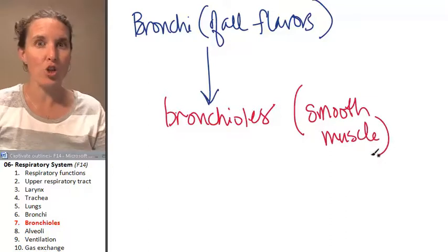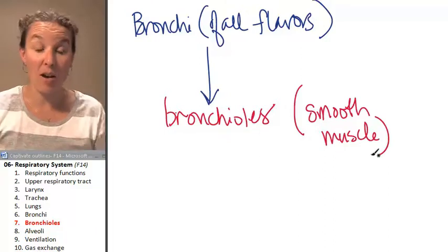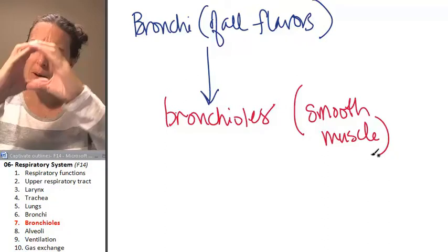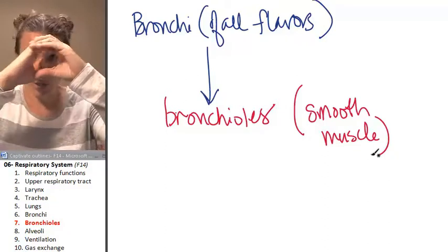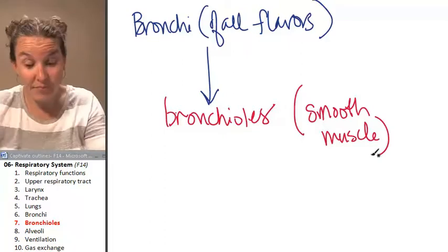Okay, structure determines function. What is going to be a function of a bronchiole if it is surrounded by smooth muscle? Bronchoconstriction, bronchodilation. Done.